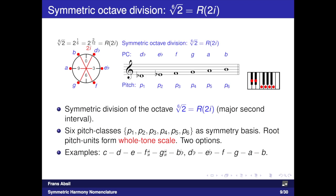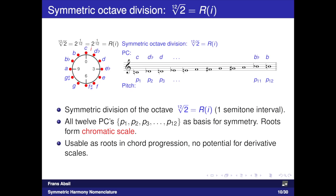The example shown is D-flat, E-flat, F, G, A, and B. Finally, there is the somewhat trivial symmetric division of the octave into 12 semitones. The 12 tonics together form the full chromatic scale, and obviously there is only one option.